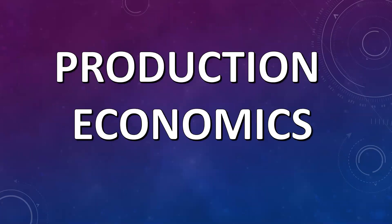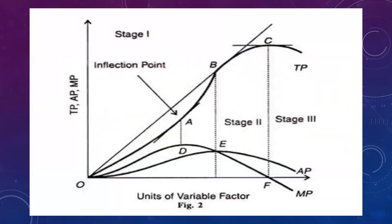Next is production economics. Have a look at the classical stages of production — stage one, stage two, stage three — and in each stage what happens to total product, marginal product, and average product. The inflection point is in stage one; at the start of stage two, AP and MP are equal; in stage three, MP is negative. From this graph alone, 10 to 15 questions can be framed, and one or two will appear in the exam.